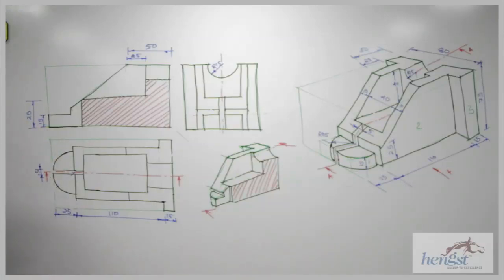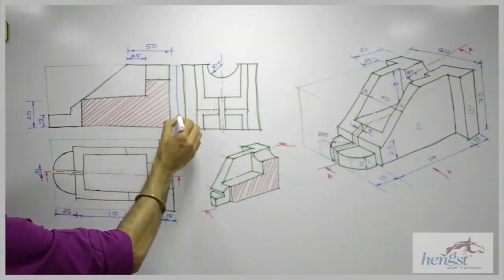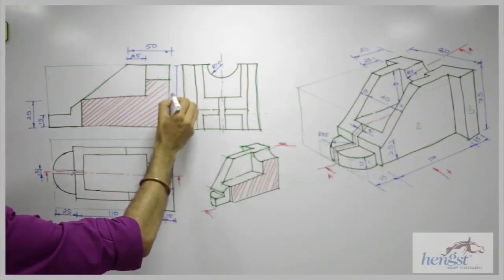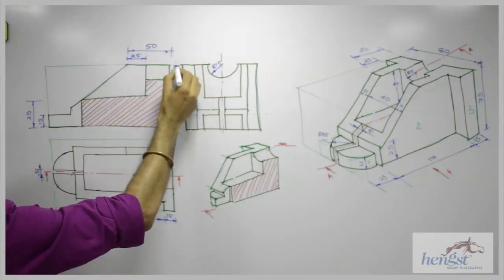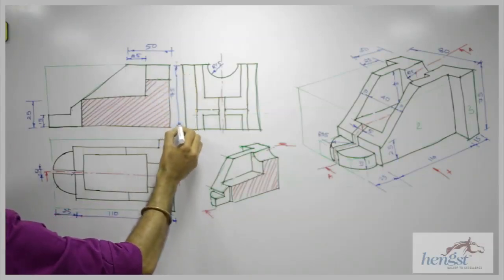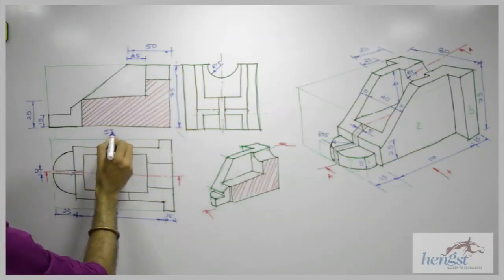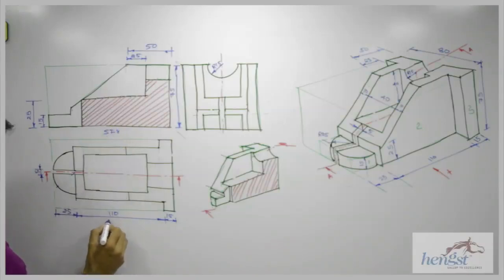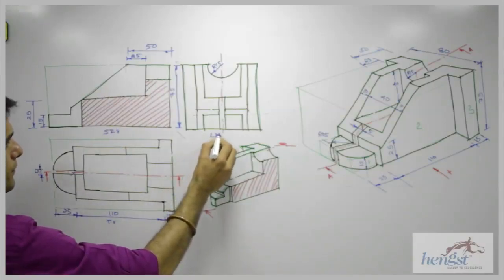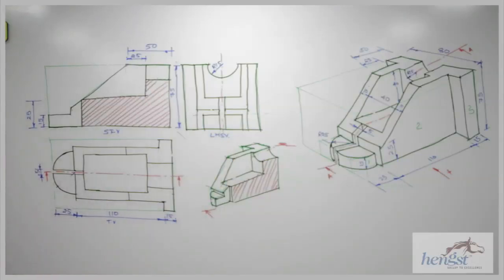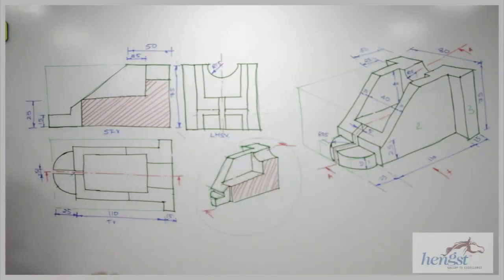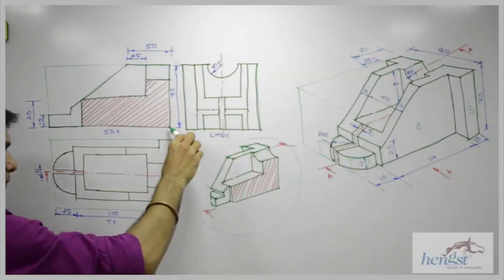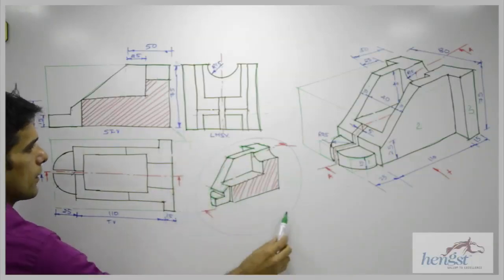You take smaller dimension inside — this is 15, this is 25 — so you draw 15 inside and 25 outside. We can also show this height, which is 75. So we have done the sectional front view, top view, and left-hand side view. This 3D figure is only for explanation — you don't have to draw this in the exam. Just draw the front view, top view, and side view, and show projections.